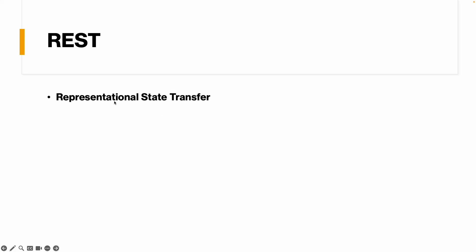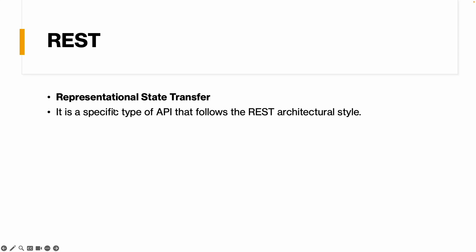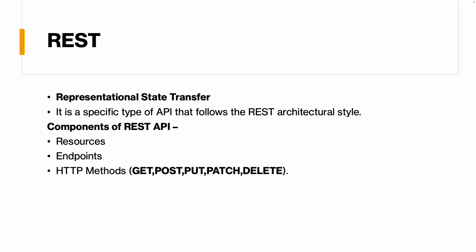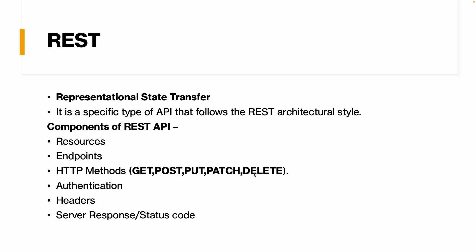REST is a specific type of API that follows the REST architectural style. Let's look at the components of REST API: we have Resources, Endpoints, HTTP Methods (GET, POST, PUT, PATCH, and DELETE), Authentication, Headers, and finally Server Response and Status Codes. Let's understand these with a practical example using a website called bookscape.com, where you can order books online.